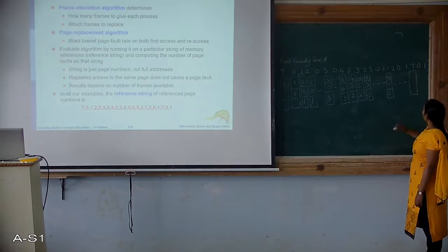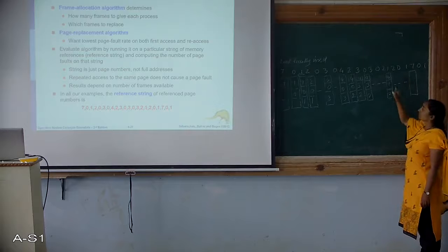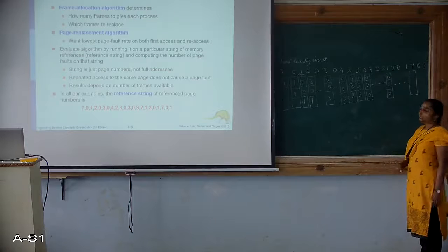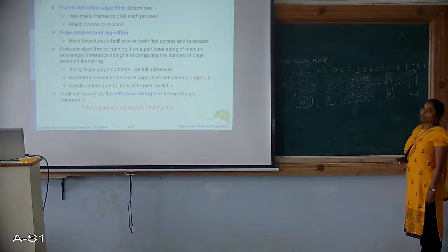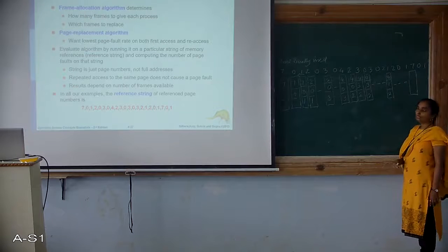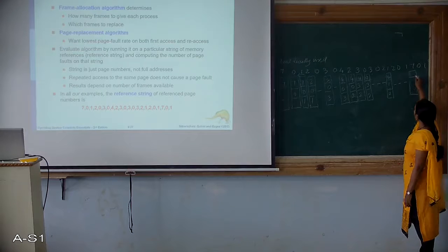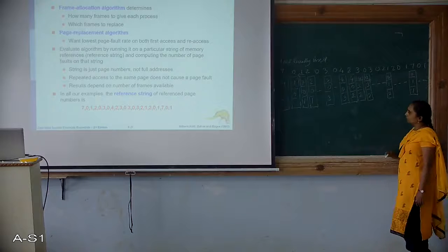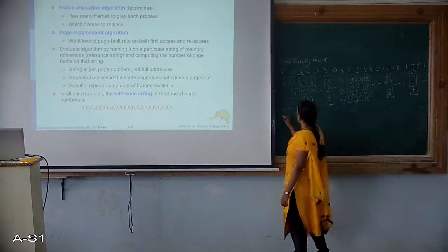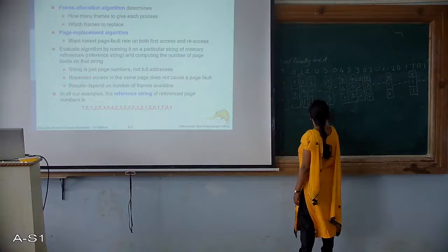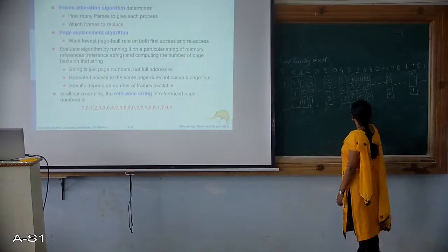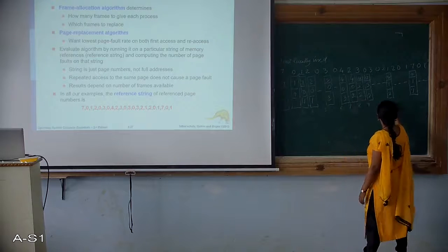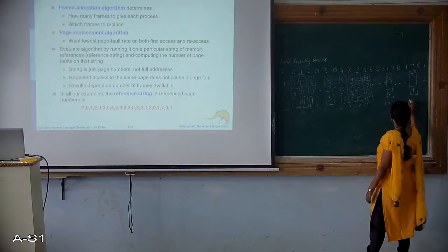Next, 7 is needed. Which will be removed? 2 is the one not recently used in the near past. So replace 2 with 7. Frames: 0, 1 and 7. 0 and 1 are already present. So how many page faults? Counting: 1, 2, 3, 4, 5, 6, 7, 8, 9, 10, 11. Number of page faults for LRU is 11.